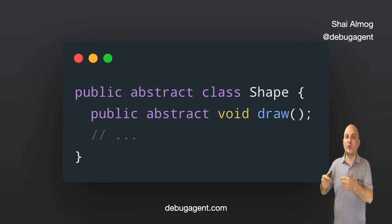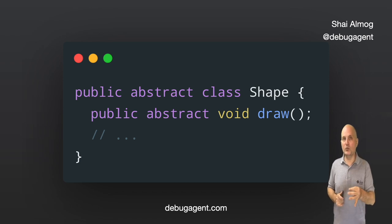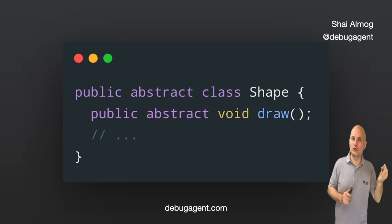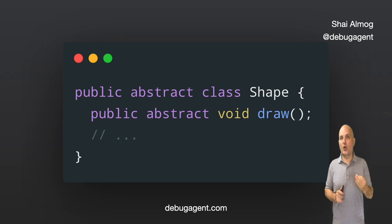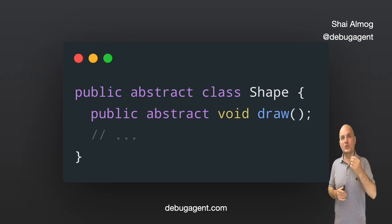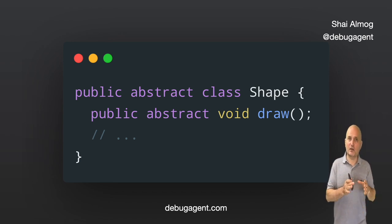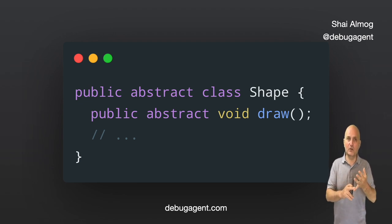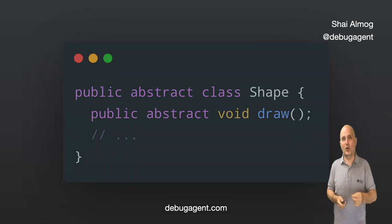Notice that the method draw has no body — just a semicolon. Yet the code that loops over the shapes to draw them would work on the abstract class just fine, since the objects themselves are from a concrete class, which is the opposite of an abstract class. Abstract classes are regular classes otherwise — they can still have fields and everything you would expect from a regular class.